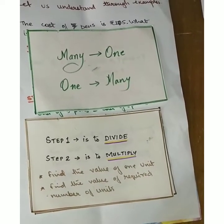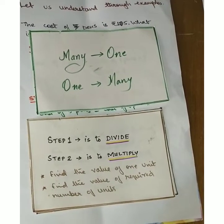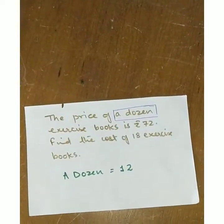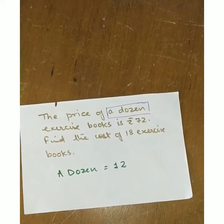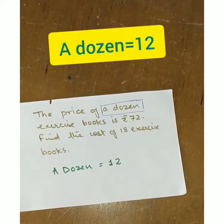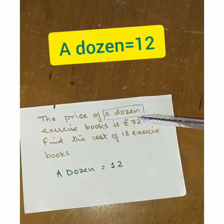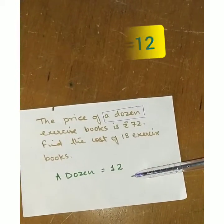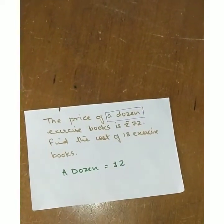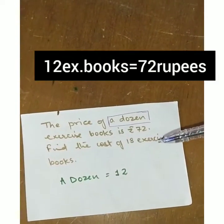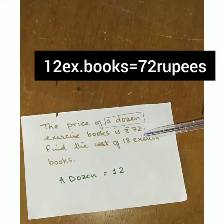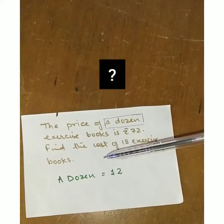Let us take one more example. The price of a dozen exercise books is rupees 72. Find the cost of 18 exercise books. A dozen means 12 pieces, so the information given is that 12 exercise books cost rupees 72.